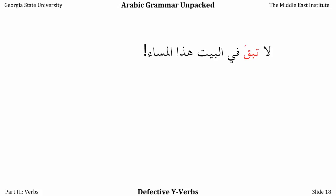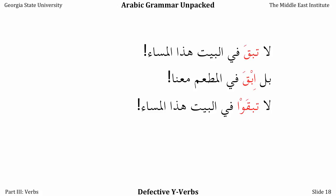La tabqa fil bayt hadha al-masa' — Don't remain at home this evening. Bal ibqa fil mat'am ma'ana — But stay at the restaurant with us. Here we have both the helping vowel and the missing letter, making it doubly confusing. In the plural, however, these are a little bit easier: La tabqaw fil bayt hadha al-masa' — Don't you all remain in your house this evening. Bal ibqaw fil mat'am ma'ana — But stay in the restaurant with us. These verbs present a real challenge because of the missing third letter, especially in the majzoom and with commands. So learn your conjugation patterns and especially learn the most common vocabulary words used with each pattern.